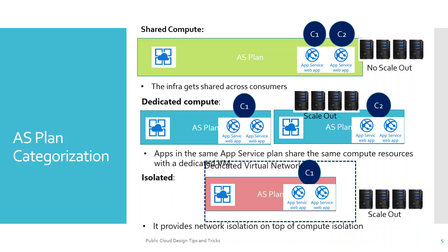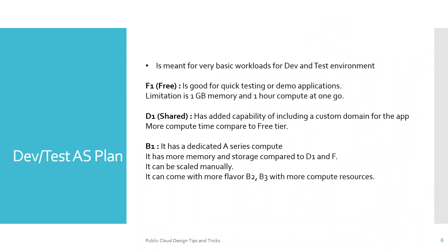In a real-life example within an organization, there are various environments: dev, test, prod, and others for performance or security testing. Based on that, you can divide plans into categories like Dev-Test App Service Plan, Production App Service Plan, or a Special App Service Plan category.